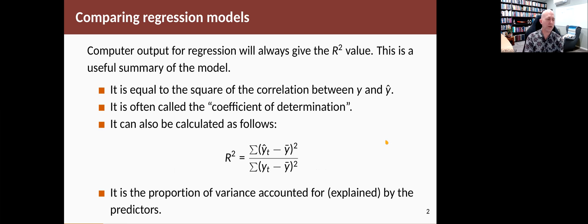So the variation amongst the fitted values to the variation in the data. The top line says how varied the fitted values are and the denominator is how varied the data is. So if you explain a lot of the variation in the data, then this is going to be close to one.